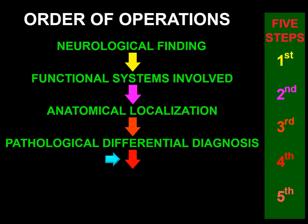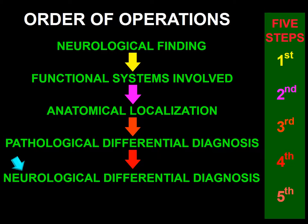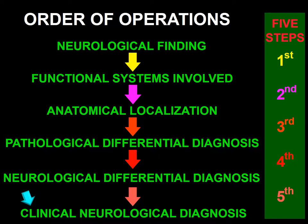Next, we ask ourselves what are the possible causes of the pathological process producing the neurological finding. The answer leads us to formulate a list of possible causes — the neurological differential diagnosis. Finally, we ask what is the most likely cause of the neurological finding, choosing from the differential diagnosis the one cause we think most likely. It is important to stress that the purpose of this algorithm is not to determine what is wrong with the patient, but to determine what is causing the neurological finding.